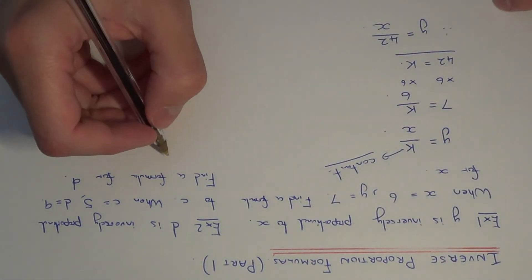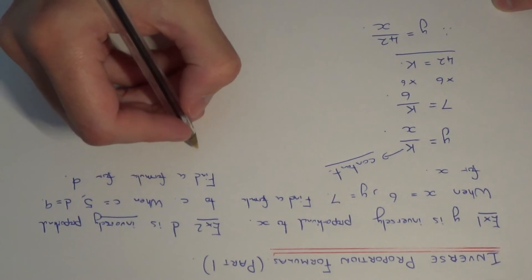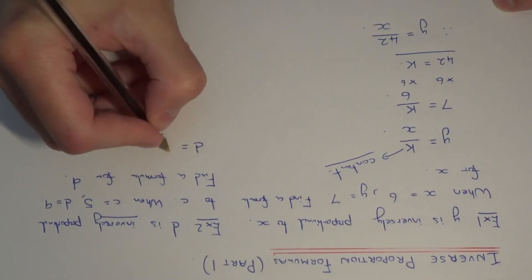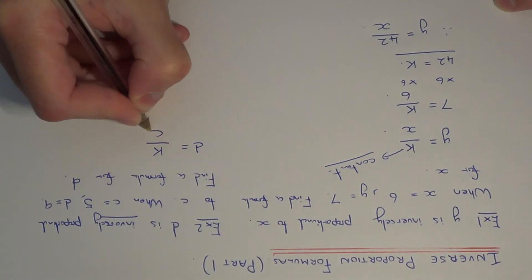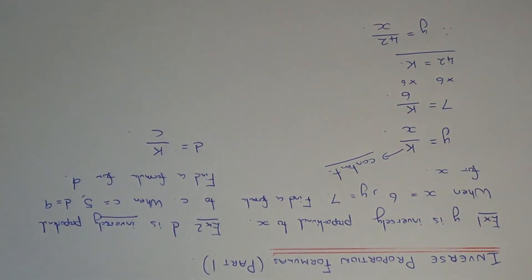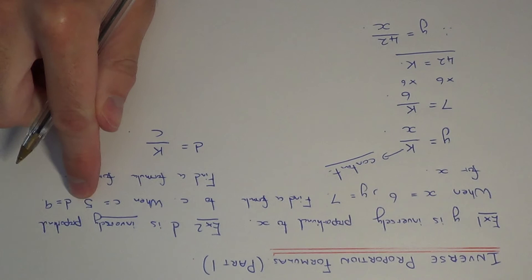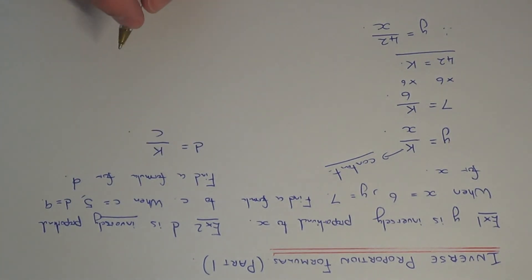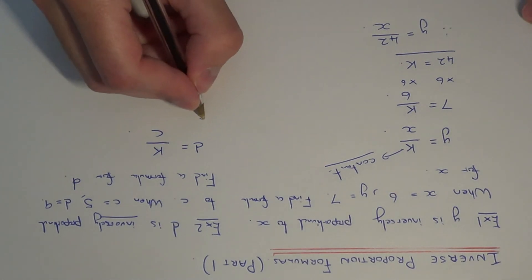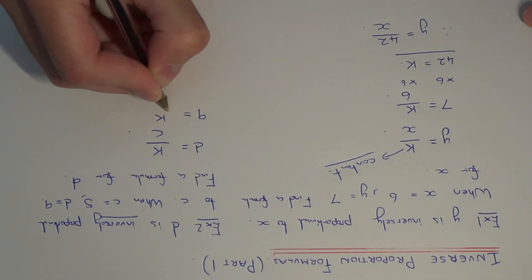So since d is inversely proportional to c, this means our formula will take the shape of d equals k divided by c. So the next step then is to substitute the two given numbers into this formula so we can figure out what the value of k is. So d is equal to 9 and c is equal to 5.